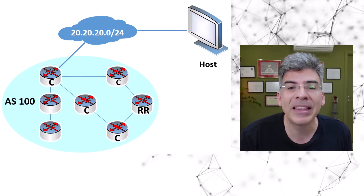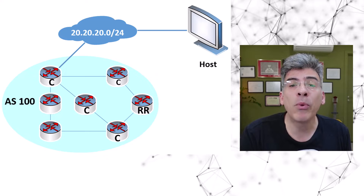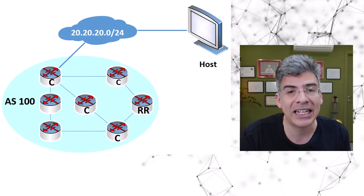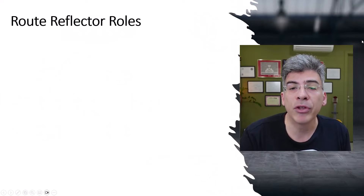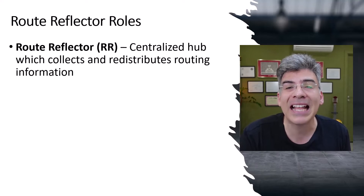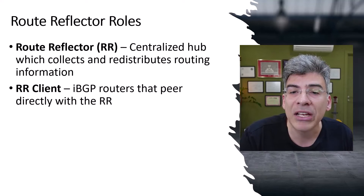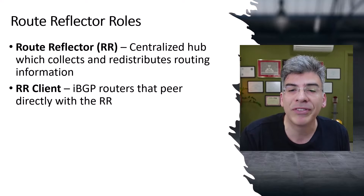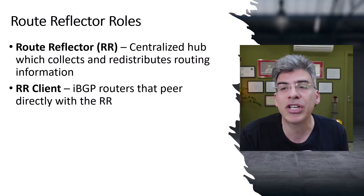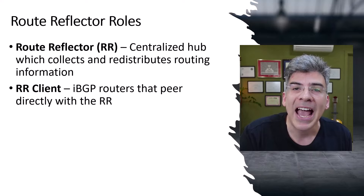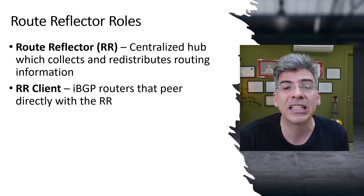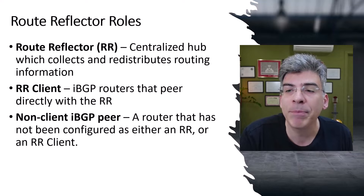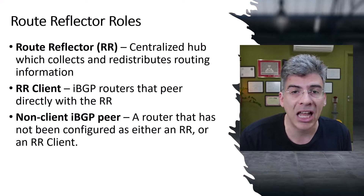When deploying an IBGP route reflector, we must become aware of the various roles that IBGP routers play within an AS. There is the role of the route reflector itself, which is the router we choose to play that centralized role. Then there is the route reflector client — these are the IBGP routers that are configured to peer with the route reflector directly. Route reflector clients don't need to establish IBGP peerings with each other, and this is the fundamental benefit that route reflectors deliver. Finally, there are non-client IBGP peers, which are those routers that have not been configured as an RR or an RR client.